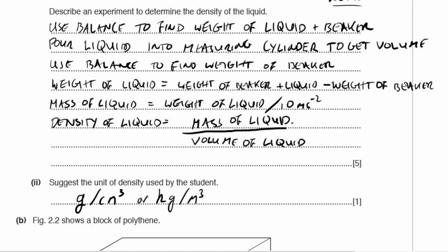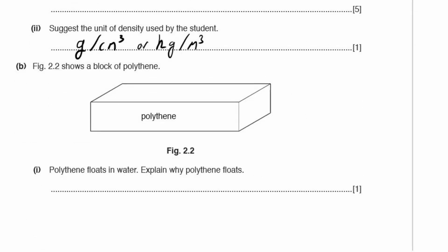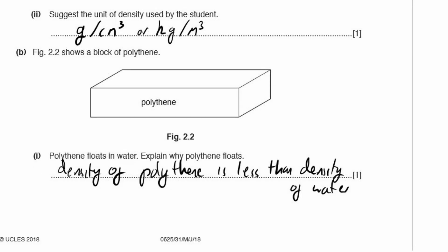Part B: figure 2.2 shows a block of polythene. Polythene floats in water — explain why. The only reason polythene will float in water is because the density of polythene is less than the density of water. The density of anything floating in water is less than the density of the water.